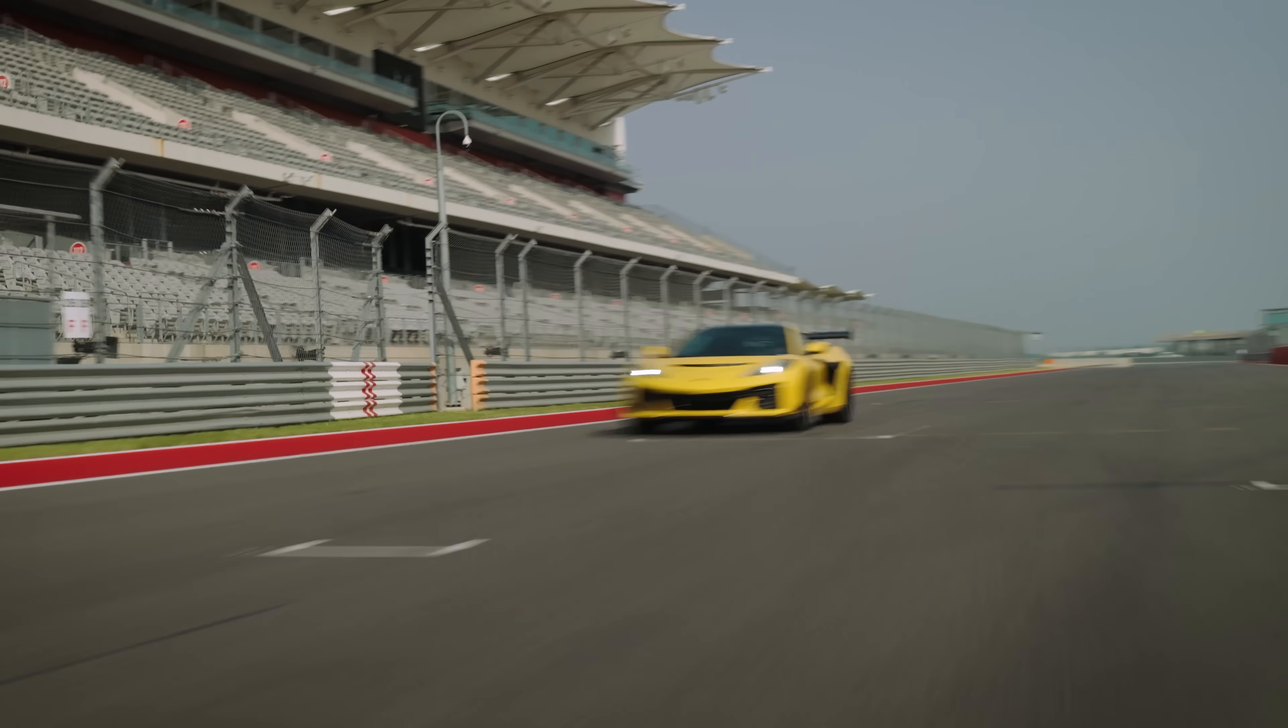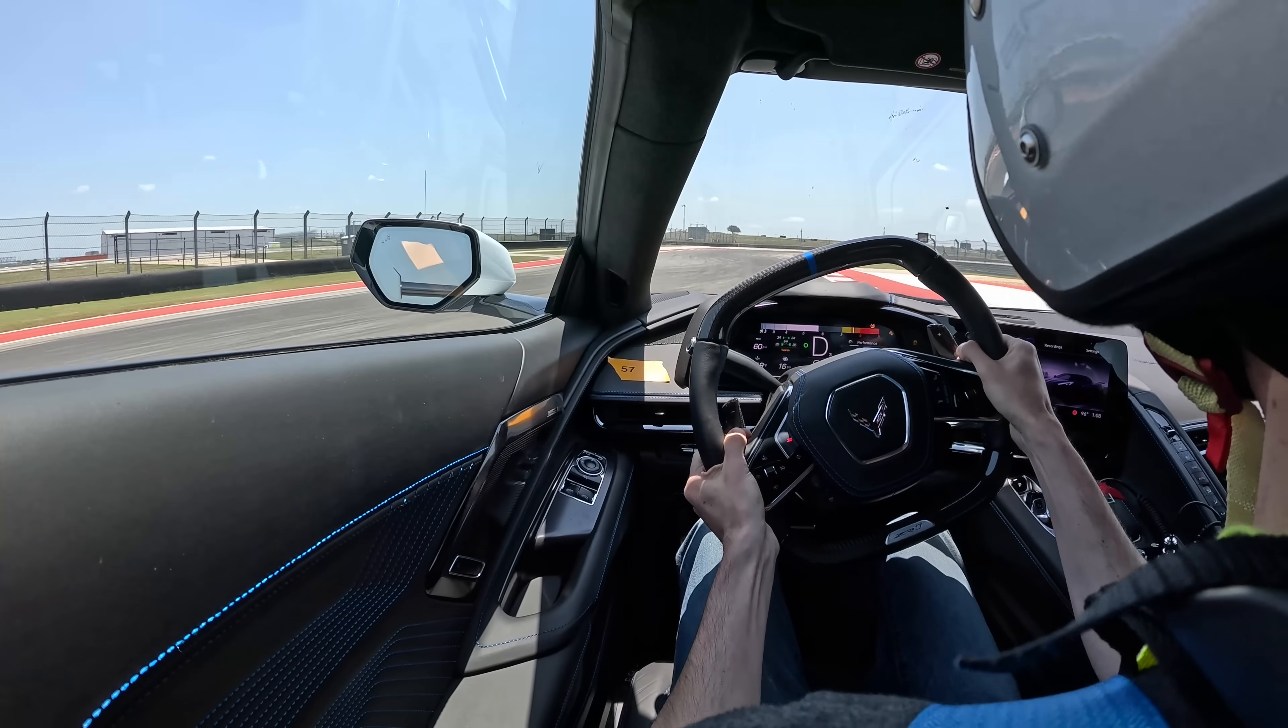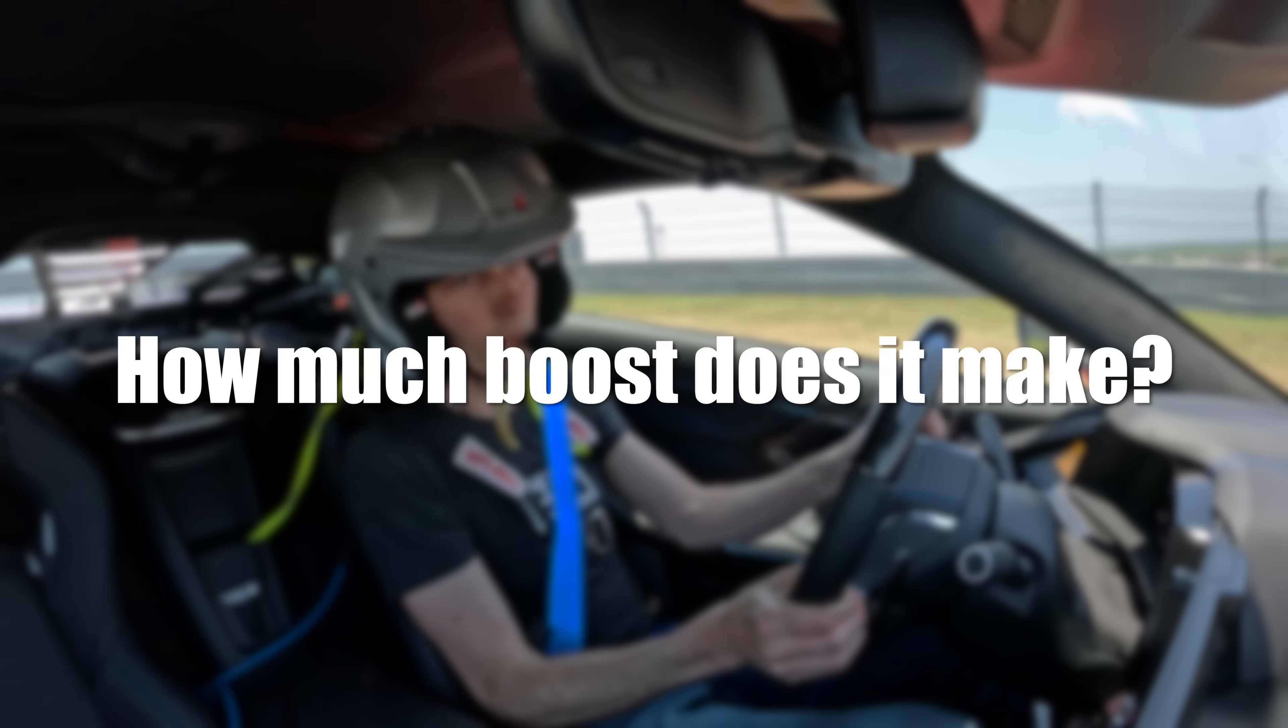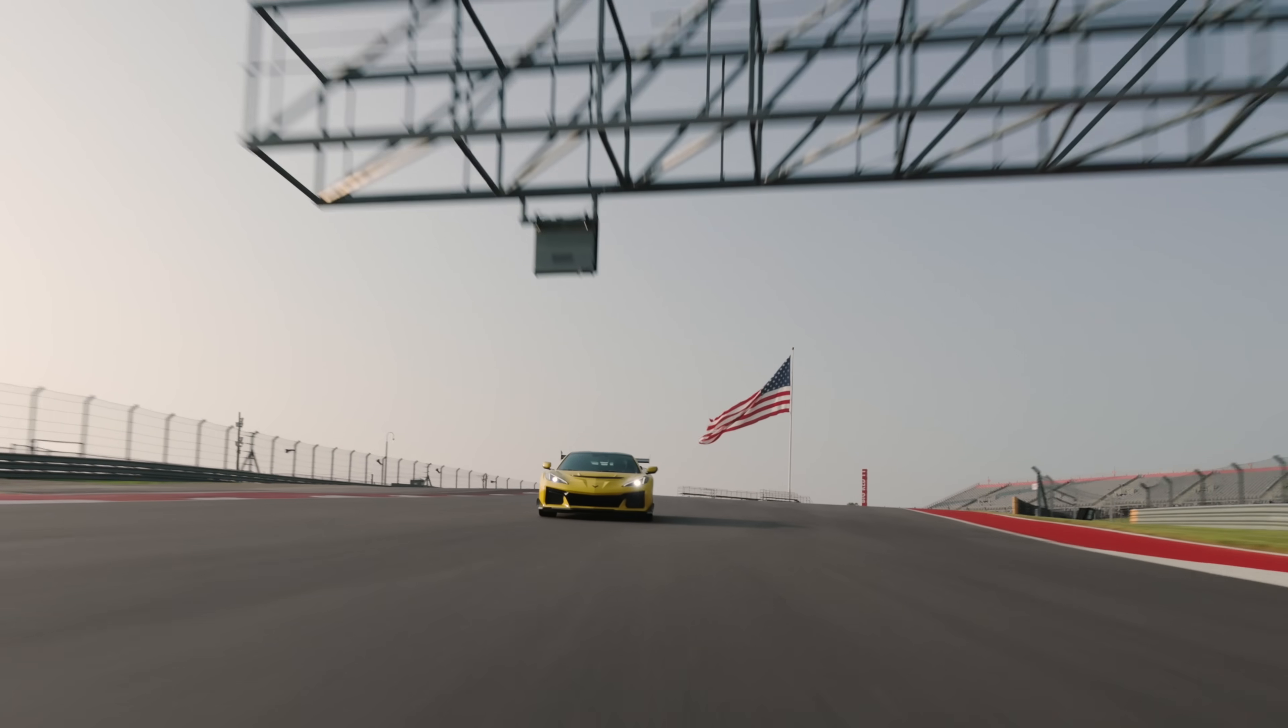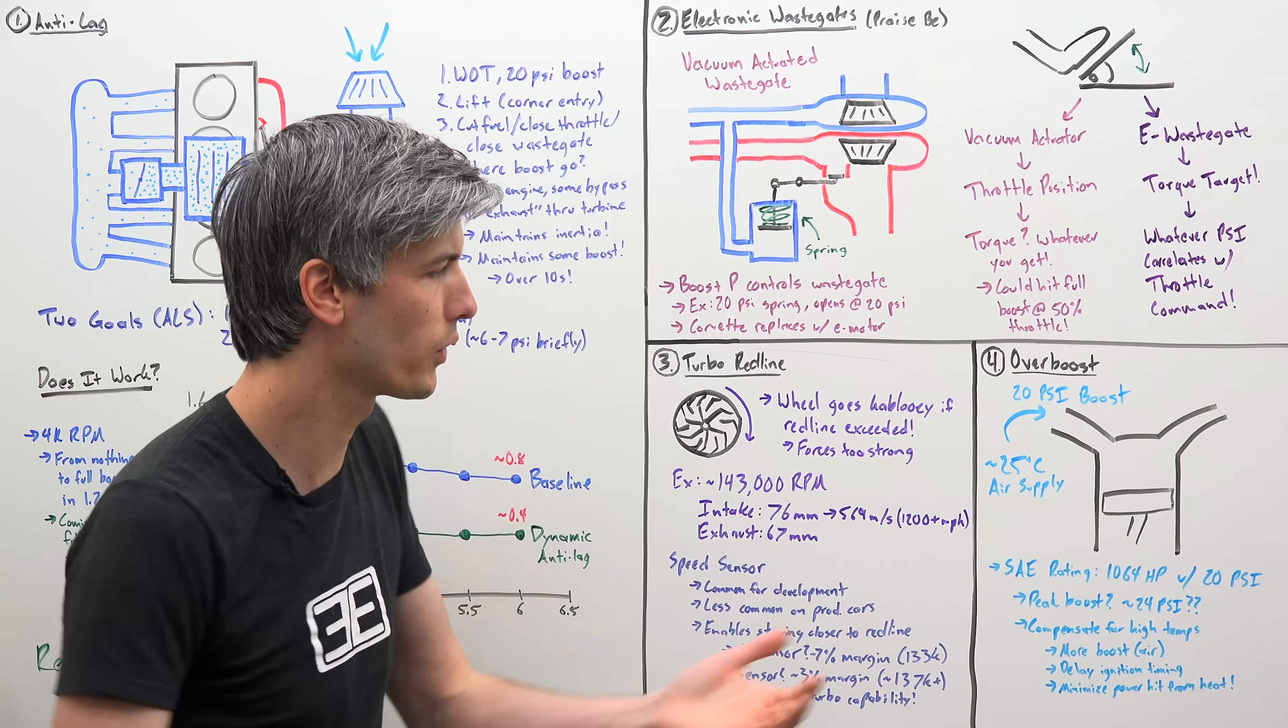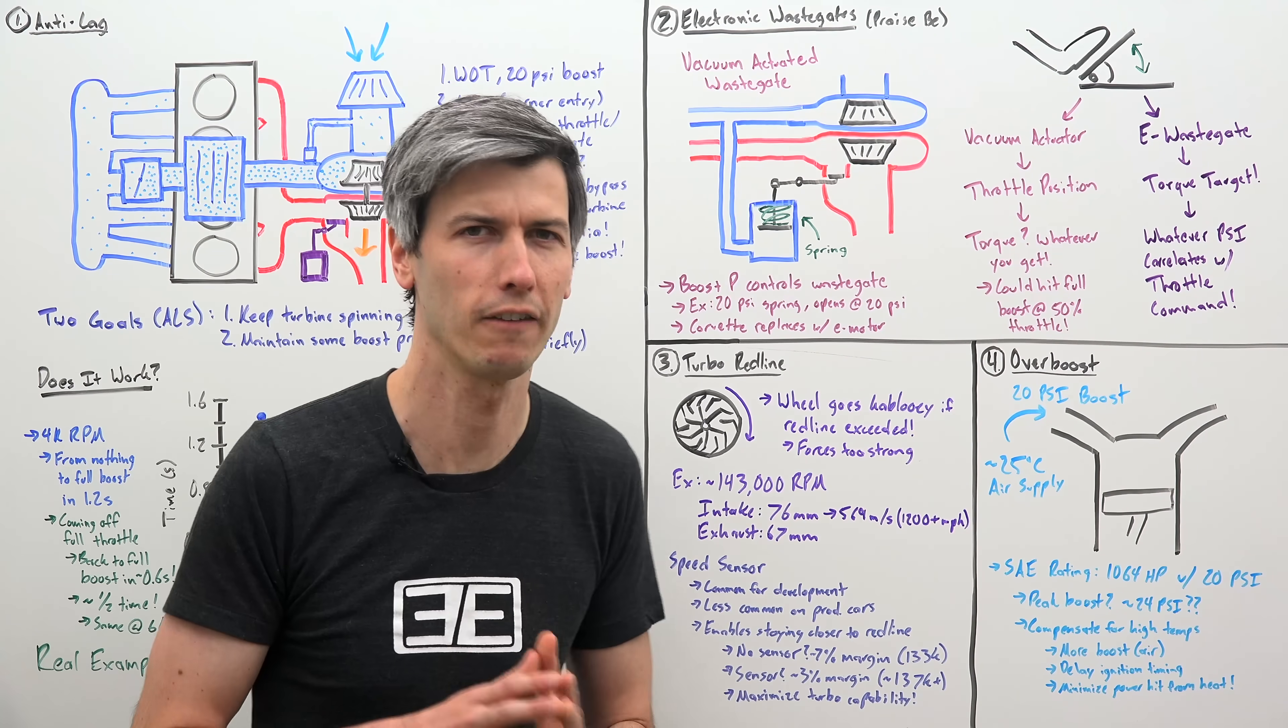And finally, we'll touch on one last subject, overboost. Now something that's often confusing about turbocharged cars is that if you ask the question, how much boost does it make? Well, there isn't really a straightforward answer because the real answer is it depends. So when the Corvette was certified for its 1,064 horsepower, it did so using 20 psi of boost.